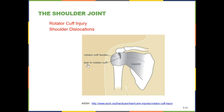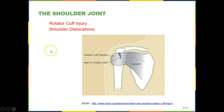Rotator cuff injuries are very common in people who use their arms a lot — lifting heavy things or constantly throwing balls, such as in baseball. A rotator cuff injury occurs when you damage the muscle or the tendon. Since tendons are composed of dense regular connective tissue, they don't have a very good blood supply, so they take more time to heal. A lot of times they're going to need surgery to repair them.